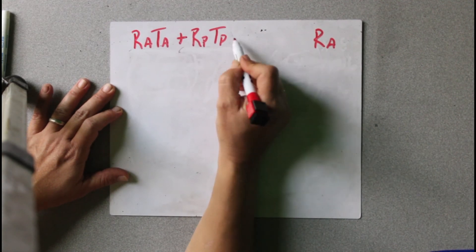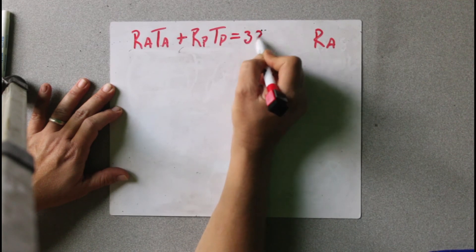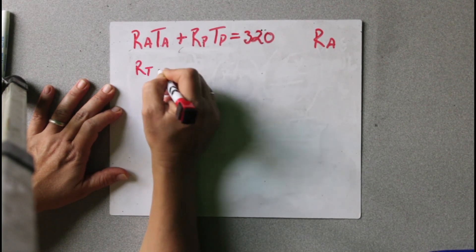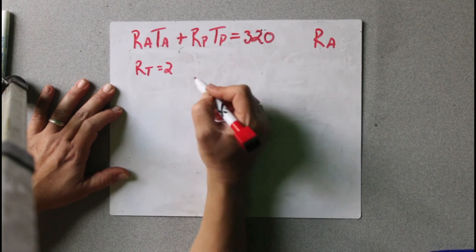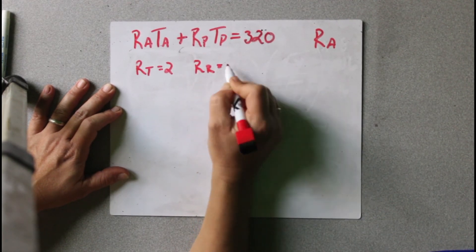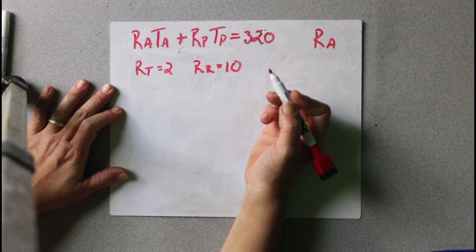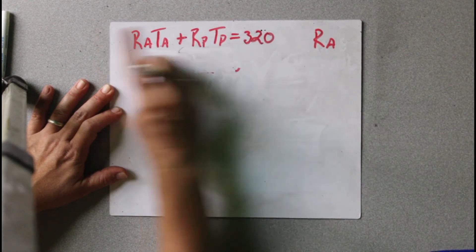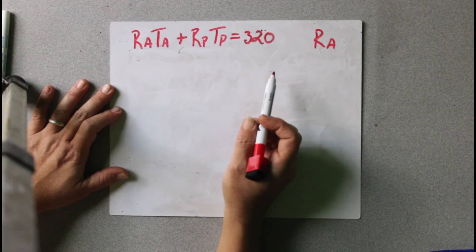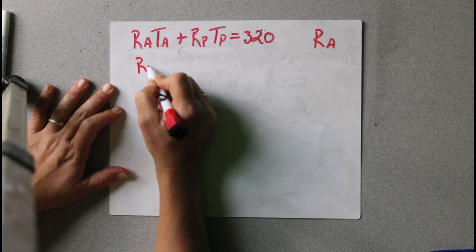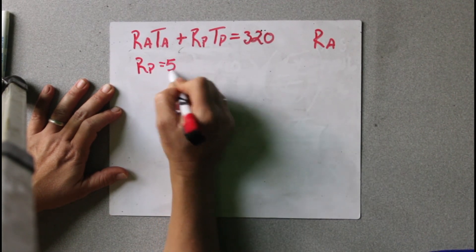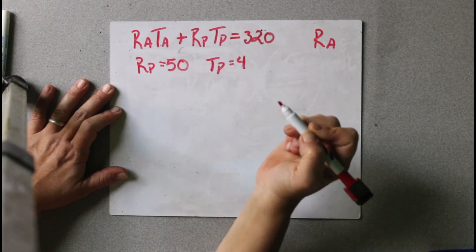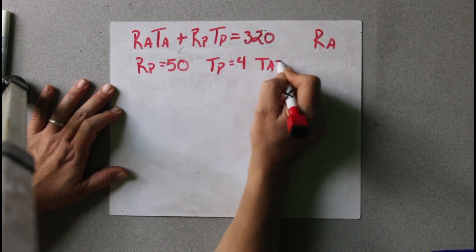They're saying that equals 320. And then we've got RP equals 50, TP equals 4, and TA equals 3. So all we have to do is substitute these values into the equation. We can see that RP is in the equation, TP is in the equation, and TA is in the equation. So all we're going to do is substitute those values in, and you'll see that we only have one variable left, which is RA.